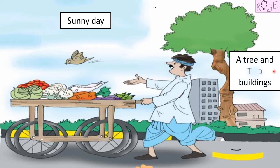What else can you see in this picture? I can see a tree and two buildings. Yes, here is a tree and behind it there are two buildings — one and two.